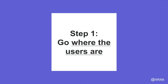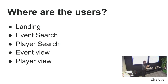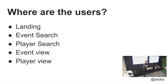Step one: go where the users are. Where are the users? We can consider that on a page level. Play is quite easy in that regard because there are two things you can do on the homepage — search for events or search for players. So the main things people land on are: landing page, event search, player search, event view, player view. There are more detailed niche views further down the information hierarchy, but those main ones are what we prioritized.